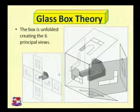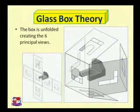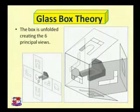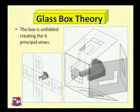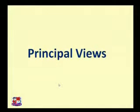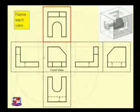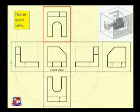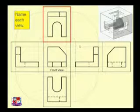After unfolding, it will appear like this. These are the six views: front view, two side views, top view, bottom view, and rear or back view. Now, what is a principal view? Here are the steps to draw all principal views — the object is lying inside the box.